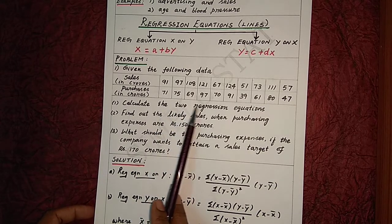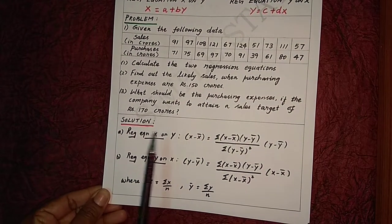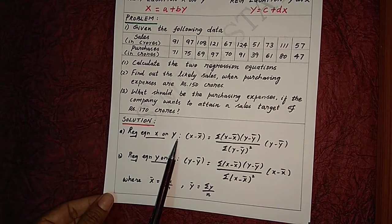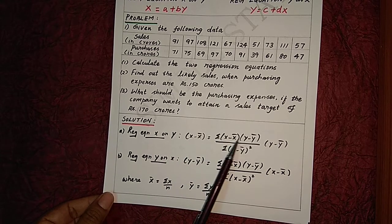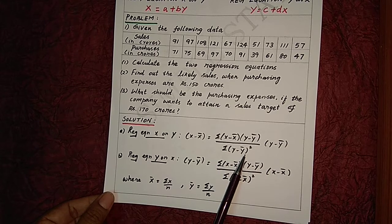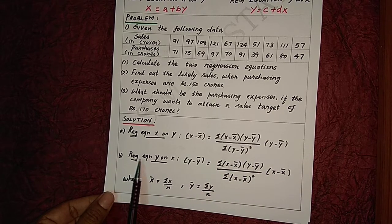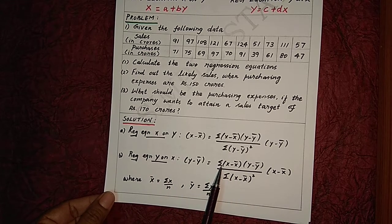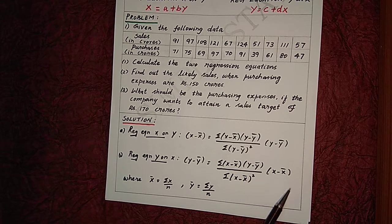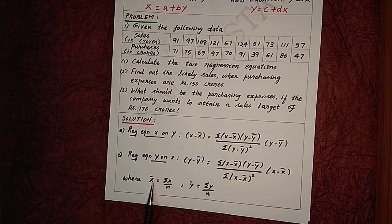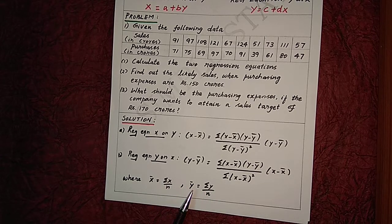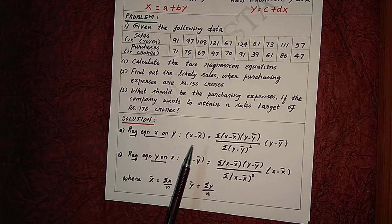The first step is to calculate the two regression equations. The formula for the regression equation x on y is: x − x̄ = [Σ(x − x̄)(y − ȳ) / Σ(y − ȳ)²] × (y − ȳ). Similarly, for the regression equation y on x: y − ȳ = [Σ(x − x̄)(y − ȳ) / Σ(x − x̄)²] × (x − x̄). Where x̄ = Σx/n and ȳ = Σy/n denote the mean values of x and y respectively. Note that these two formulae are used when we find deviations of x and y from their mean values.